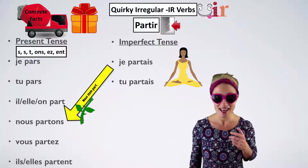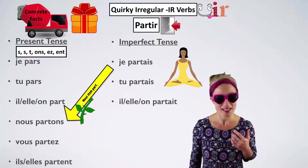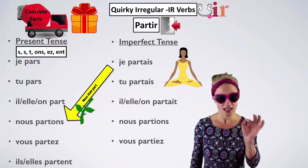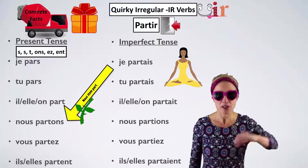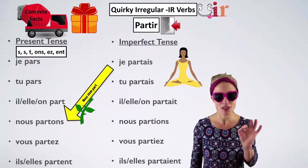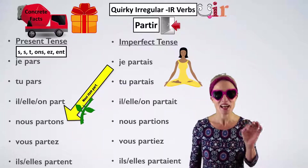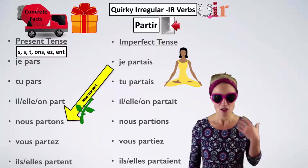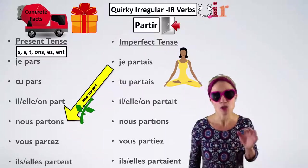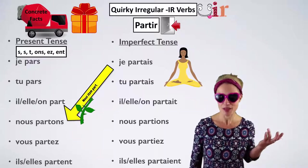Tu partais — with the -AIS. Il/elle/on partait — -AIT. Nous partions — -IONS. Vous partiez — -IEZ. The last one sounds like the first three, even though it's got -ENT at the end — it is silent. Ils/elles partaient. So: I was leaving. She was leaving. She used to leave. What if we left? How about if we left? I never left on time when I was working at this place.